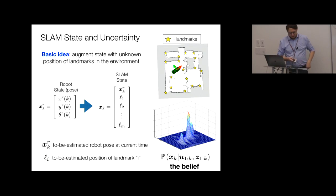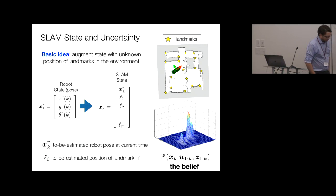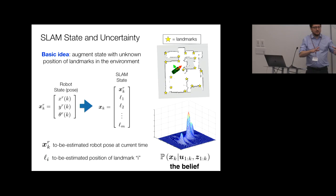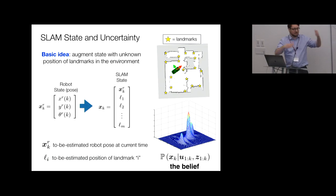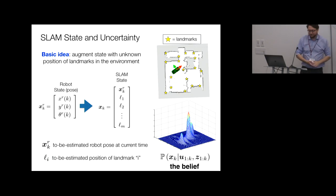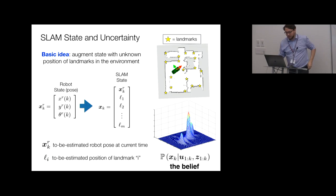Is this distribution typically multimodal? It depends on the sensor data. With very accurate sensors, the peak of the distribution is well-defined. With more ambiguity in sensor data, the distribution becomes messier. For some problems it's fair to approximate this distribution with a Gaussian, but in general it's a very complicated, high-dimensional distribution.